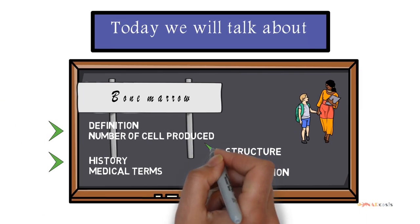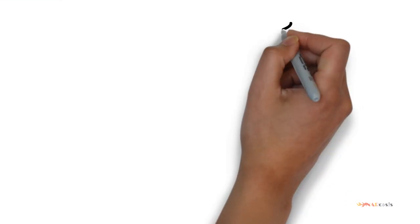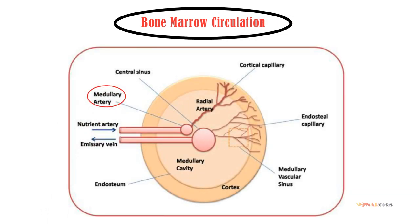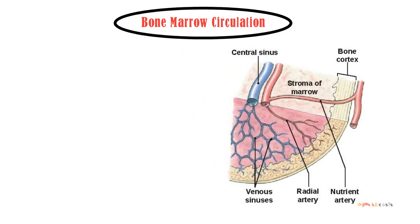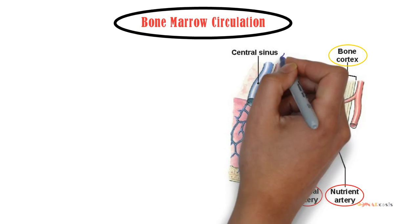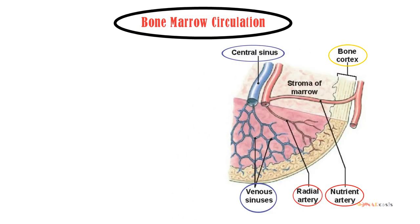Now let's jump to the final subject in this video which is the bone marrow circulation. The marrow circulation comprises central and radial arteries that ramify in the cortical capillaries, then join the marrow sinusoids and finally drain into the central sinus. As we can see in this image, the nutrient artery penetrates the bone cortex and then gives the central artery which gives the radial artery, and then ramifies to the cortical arteries that go to the venous sinuses and finally to the central sinus.